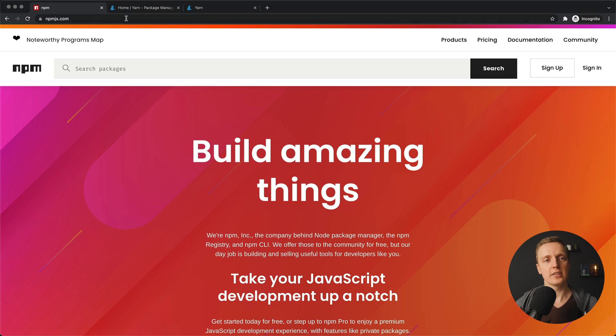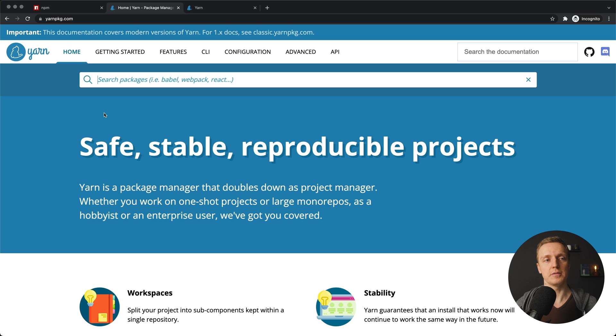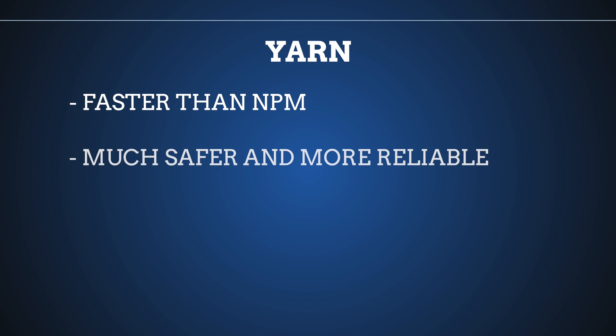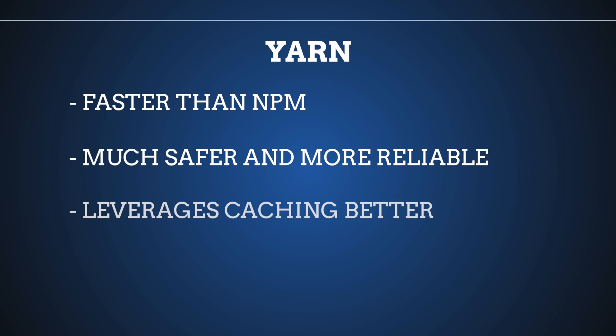After some time Facebook created an alternative to NPM called YARN. As you can see here is the official website, yarnpkg.com. They did a really good job — at that moment YARN was much faster, much safer, more reliable, and leveraged caching much better.